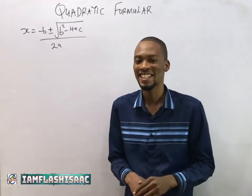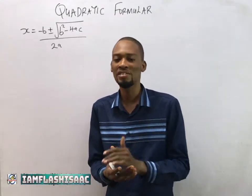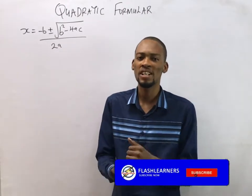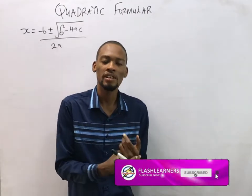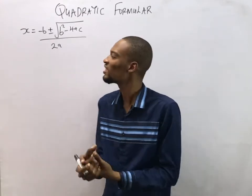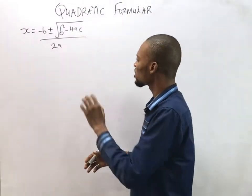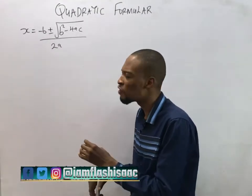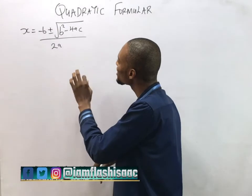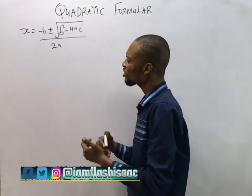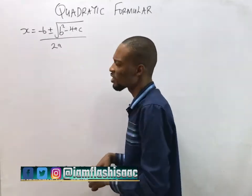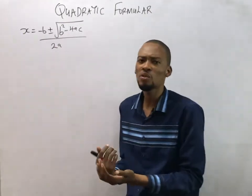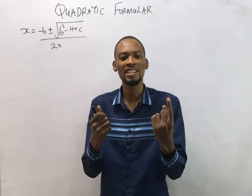Hello guys, I am Flash Isaac and today I'll be taking you through how to derive the quadratic formula, popularly known as the almighty formula. We know that you can solve quadratic equations using the factorization method, even graphs, completing the square method, and using the formula method. The quadratic formula is x equals negative b plus or minus square root of b squared minus 4ac, all over 2a. Now, how did this equation come about? If someone asks you to prove that x equals this, how do you go about it?